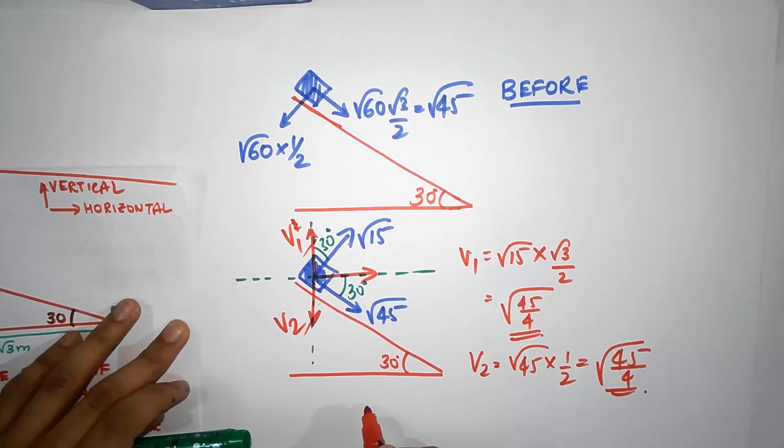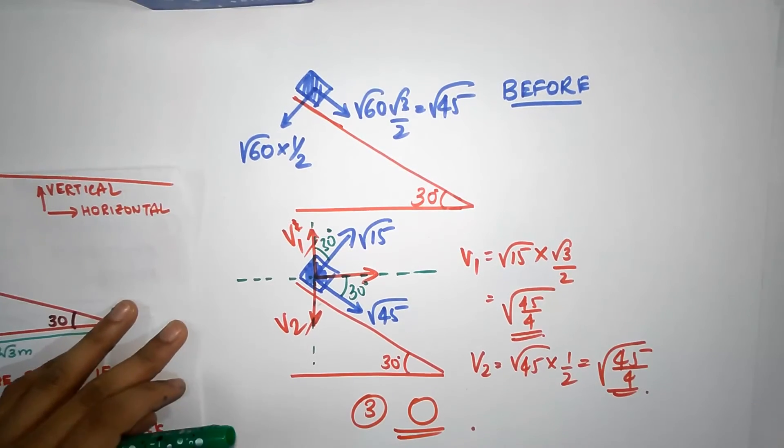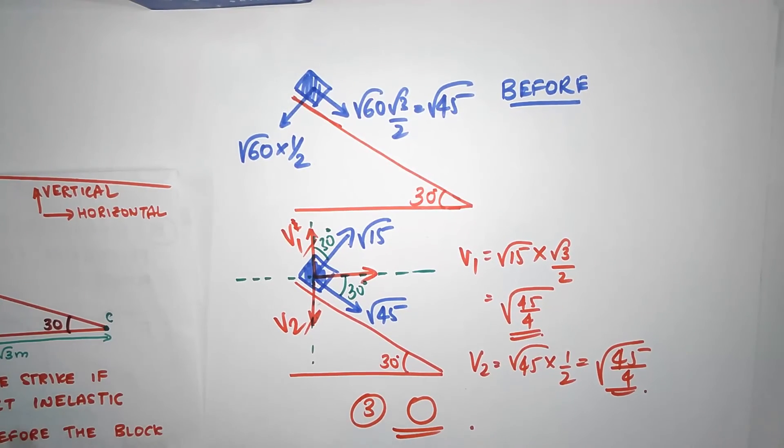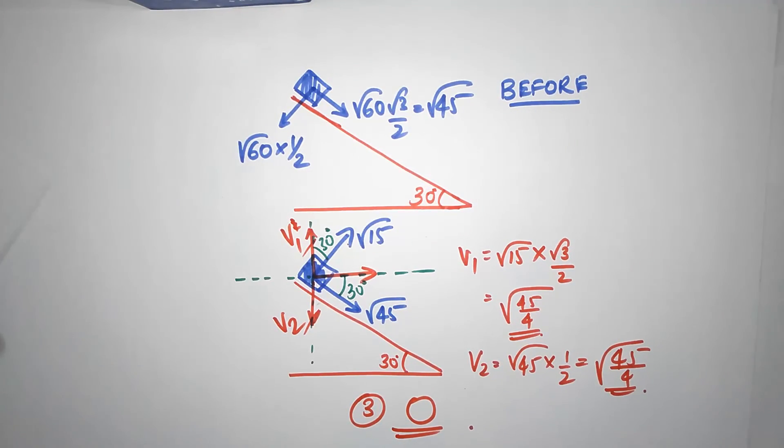So the answer for the third question is that the vertical component of velocity is zero. Stay tuned for more.